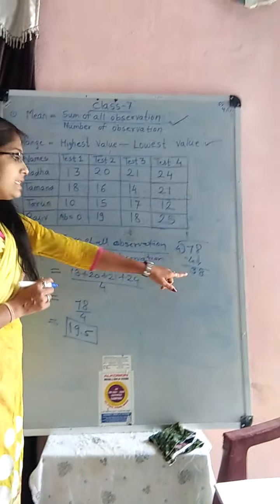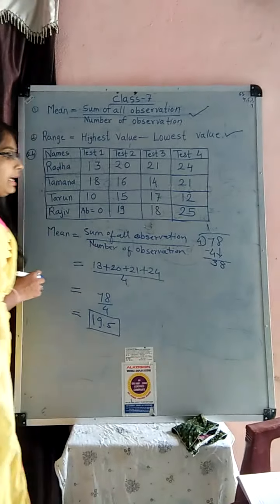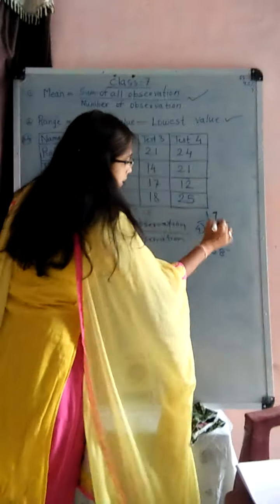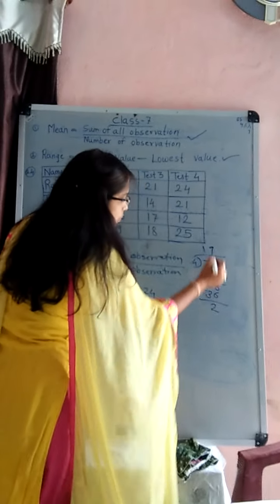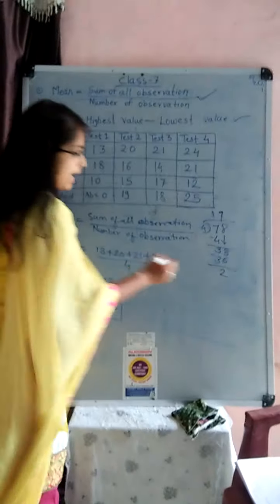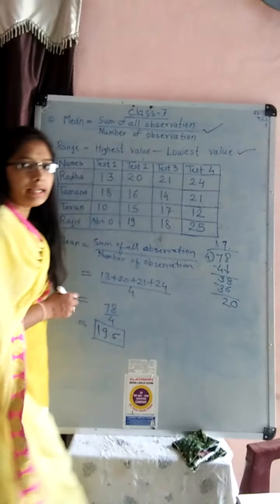then that 8, take down side, it become 38, then 4 nines are 36, subtraction is 2, then take point and take 0 downside.